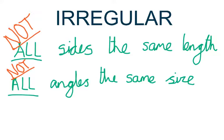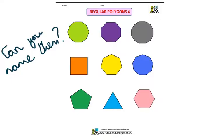So irregular shapes are the opposite: not all the sides the same length, not all the angles the same size. Even if it's just one that's different, it's still irregular. Here are some examples of regular polygons — how many of these do you know the name of? I'll give you a second to have a look through. What I suggest you do is count the sides and see how many sides they've got, and see how many you know.